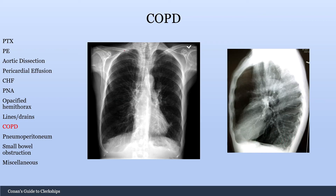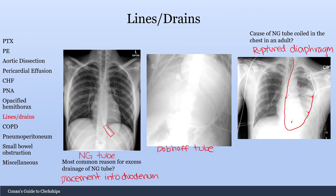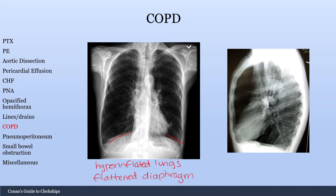Moving on to COPD. There are a couple of findings here that will be important. The first thing to notice is look how hyperinflated this person's lungs are — that is one of the hallmark signs of COPD. Another thing you should be looking at is the diaphragm. This is what's called a flattened diaphragm. Compare this to a normal diaphragm — look how curvy this diaphragm is, whereas this person's diaphragm is just so flat, both on the lateral and the frontal x-ray.